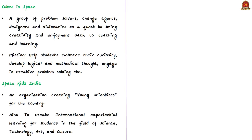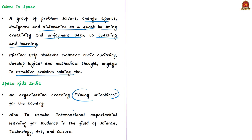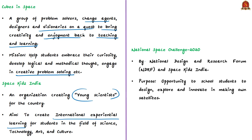Space Kids India is an organization that aims to create young scientists, spreading awareness among children for a borderless world through international learning in science, technology, art, and culture. They claim to be the first in the world to have launched satellites through high school and college students, and they are an ambassador to space camps conducted by NASA, the European Space Agency, and the Yuri Gagarin Research and Test Cosmonaut Center of Russia. In January 2020, Space Kids India organized the National Space Challenge 2020 with the National Design and Research Forum, giving school students the opportunity to design, explore, and innovate in making their own satellites.